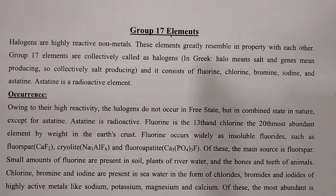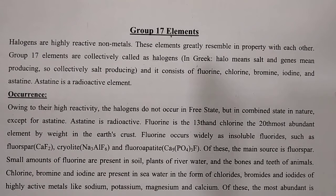The group consists of fluorine, chlorine, bromine, iodine, and astatine. Astatine is a radioactive element, so when we learn about physical and chemical properties, we will start with fluorine and end with iodine. First, we cover occurrences, then we move on to electronic configuration.